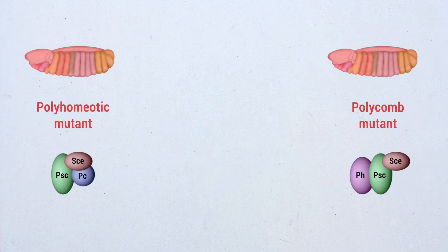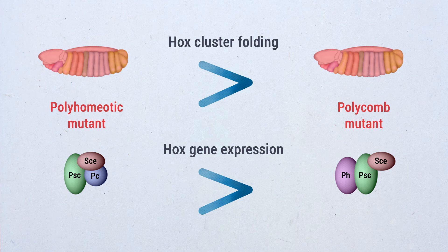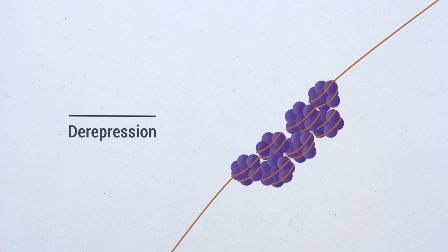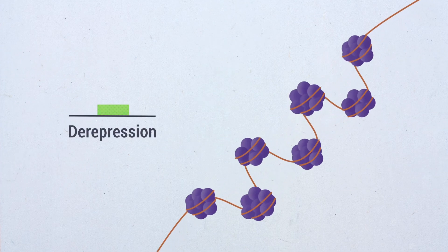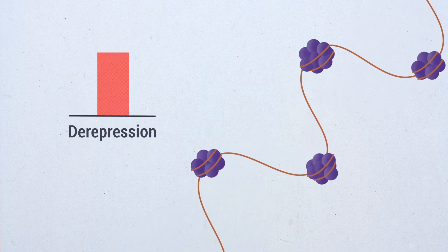Moreover, the differential effects of Polyhomeotic and Polycomb on Hox cluster folding match the differences in ectopic Hox gene expression observed in these two mutants, suggesting that the degree of Hox derepression in polycomb group mutants depends on the degree of structural constraints imposed by each polycomb group component.